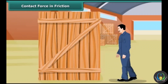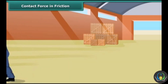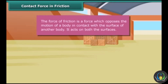The box will move only when a greater force than the force of friction is applied. Once the box starts sliding, you may find it easier to move the box. This example proves that friction depends on the amount of contact force pushing the two surfaces together. Now we can easily define force of friction: the force of friction is a force which opposes the motion of a body in contact with the surface of another body.